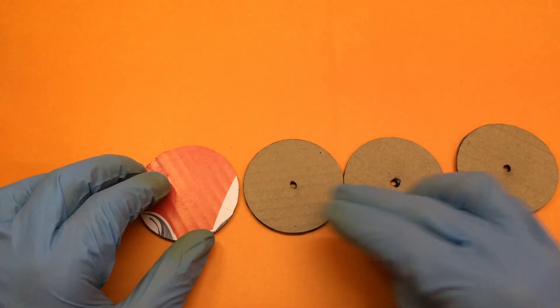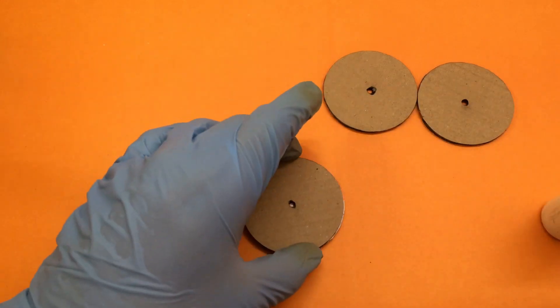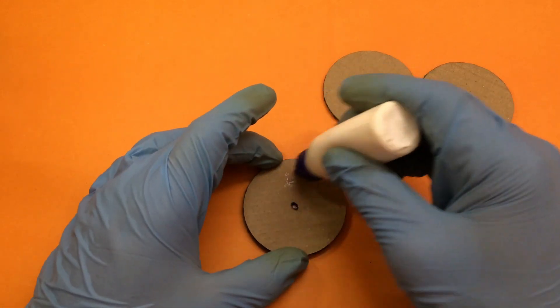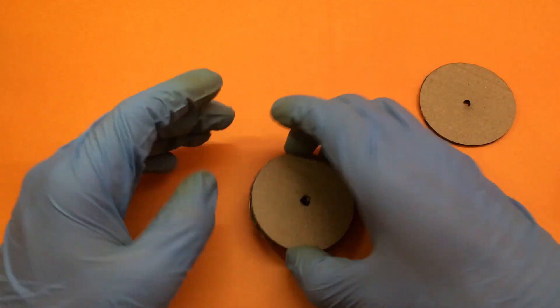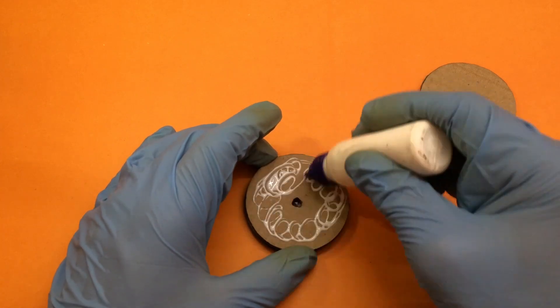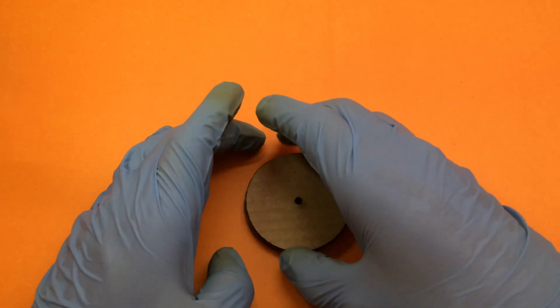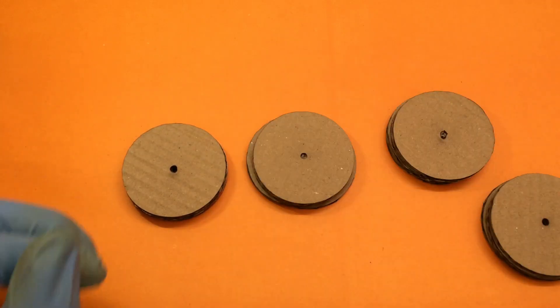While the side panels are drying let's prepare the wheels. For the wheels we will be needing four round pieces of cardboard out of which three should have hole in the center. The fourth one will be used as a base. Now we will stack this over one another by gluing them and after creating one piece we have to recreate this for three more wheels.